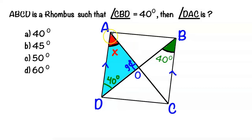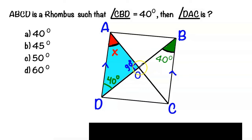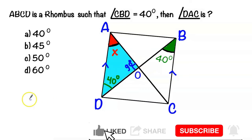And now let's look at triangle AOD. We know that the sum of angles is equal to 180, so angle x plus 40 degrees plus 90 degrees is equal to 180.